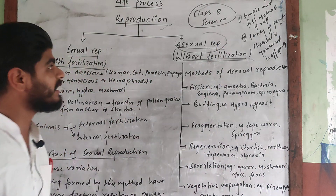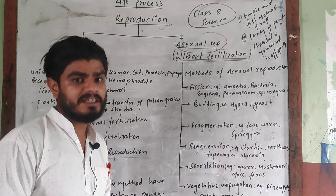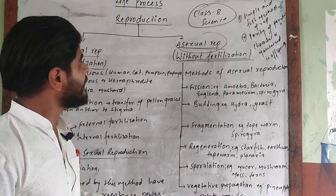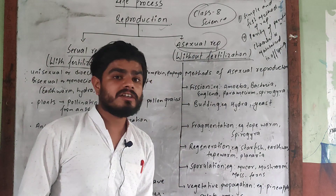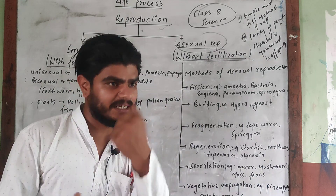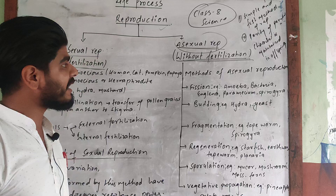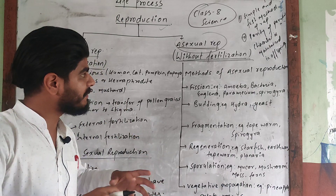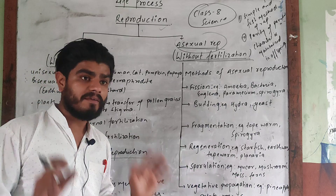What does significance mean? The first significance is that asexual reproduction is a simple and fast method of reproduction. It is the simple and fast method of reproduction. Purity of parental character is maintained in offspring — this is a very important point.